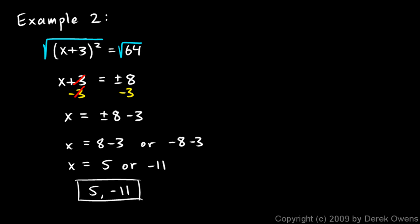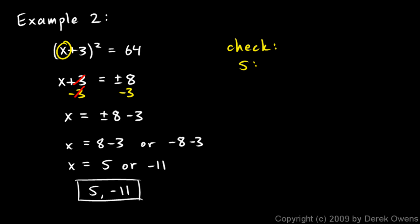What does that mean? These are values of x that satisfy the original equation. Let's check x equals 5: plug it into the original equation to get 5 plus 3, squared, equals 64. Well, 5 plus 3 is 8, and 8 squared is 64 — that works.